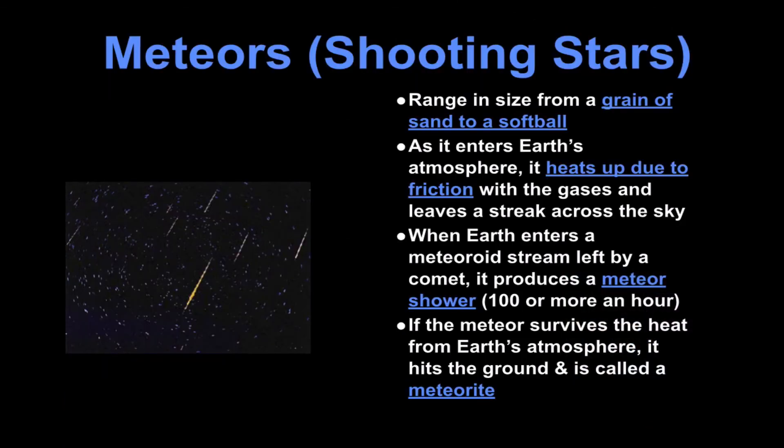Okay which brings us to meteors or shooting stars. Range can be as small as a grain of sand to a softball and they enter Earth's atmosphere. The friction causes them to heat up and basically is kind of vaporizing or heating up enough the gases leaves a streak across the sky.